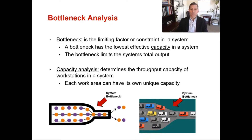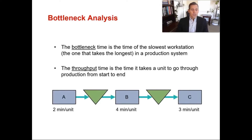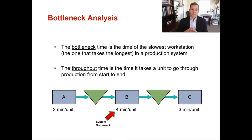Each workstation has its own capacity. In this example with three steps — process A at 2 minutes, process B at 4 minutes, and process C at 3 minutes — the bottleneck is process B, the slowest workstation. Everything stops there because it has the lowest system capacity, and that's where backlog will accumulate.